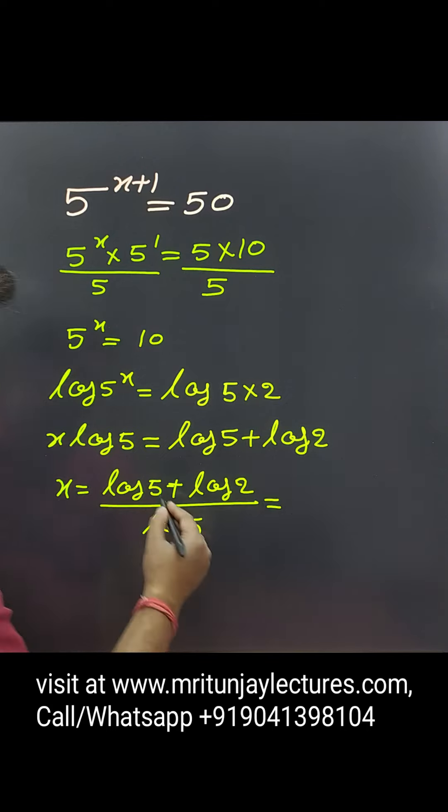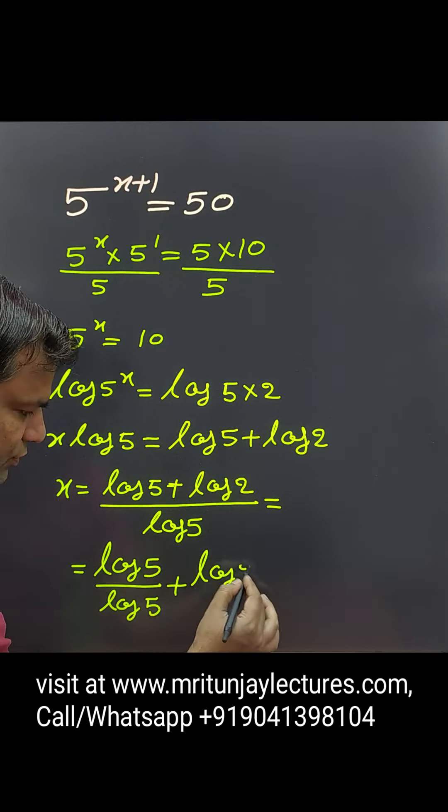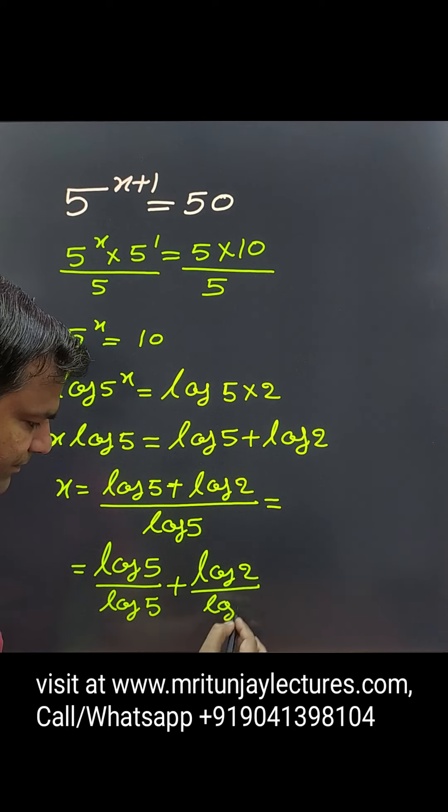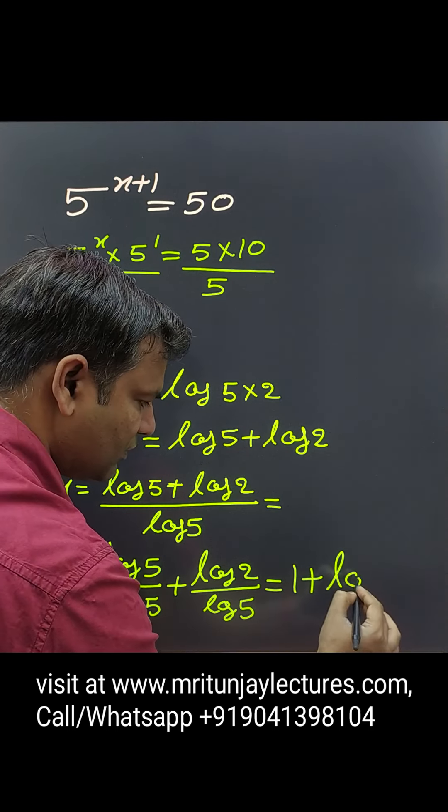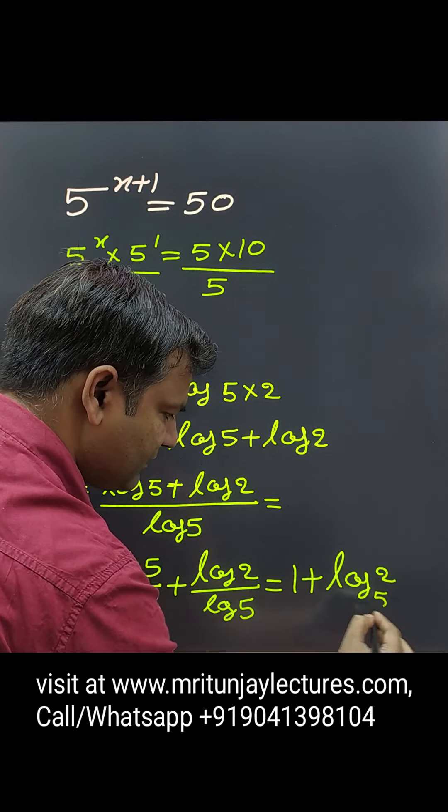After that, if we divide, we get log 5 divided by log 5 and log 2 divided by log 5. That is 1 and that is written as log 2 at base 5.